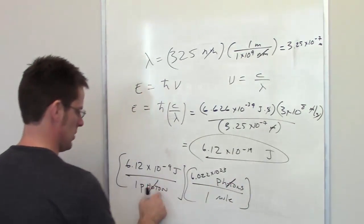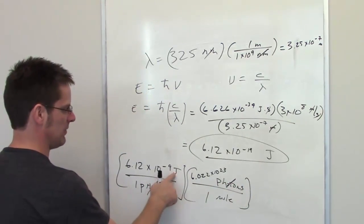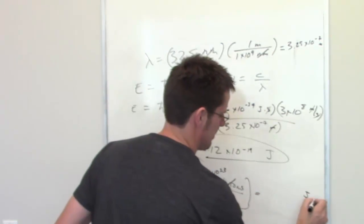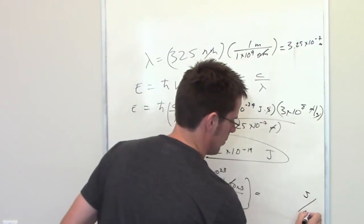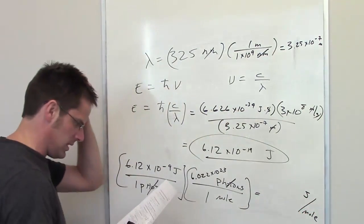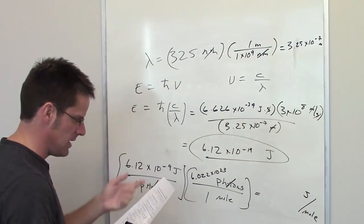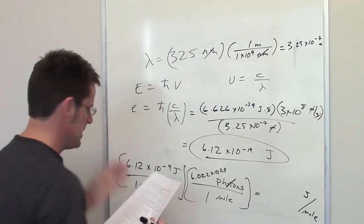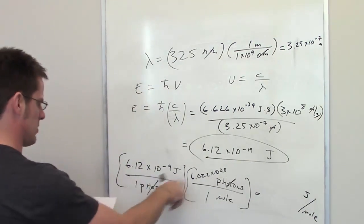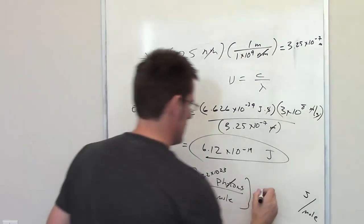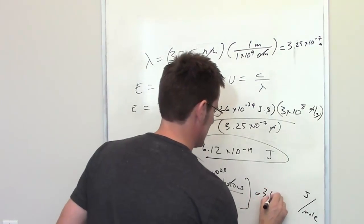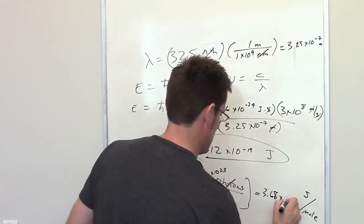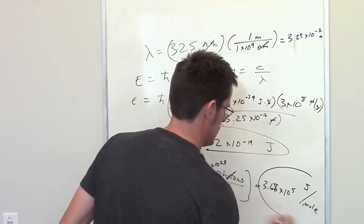The photons unit-wise cancel each other out, and I'm left with joules per mole. That tells me how many joules there are in one mole — which is what the question is asking. Throwing that into my calculator, I end up getting 3.68 times 10 to the 5th joules per mole.